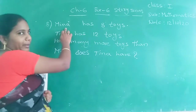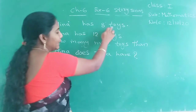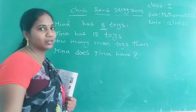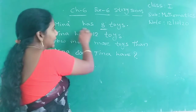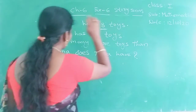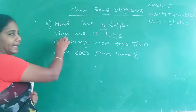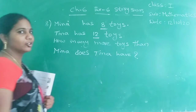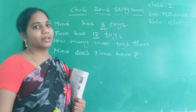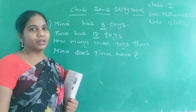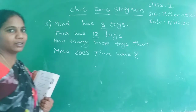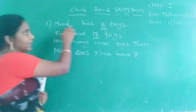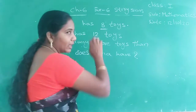Look at the picture. See, the girl is there — Mina. Mina has 8 toys. You know very well what toys are — in your home also you have toys. So Mina has 8 toys. Next, another girl is there — Tina. Tina has 12 toys. Suppose in your house your neighbors will be there, you will play with your friends. Like that, here also two girls are there — Mina and Tina. Mina is having 8 toys, Tina is having 12 toys.